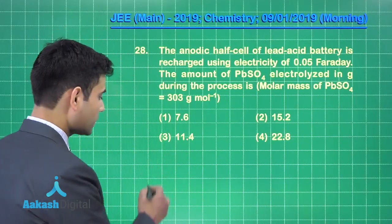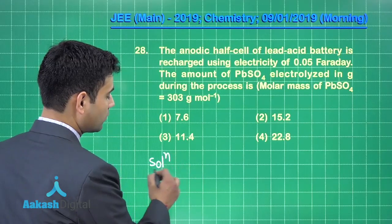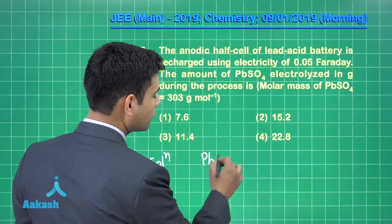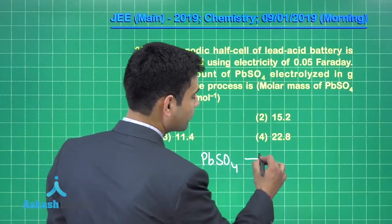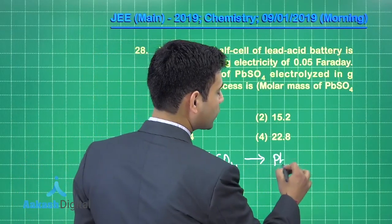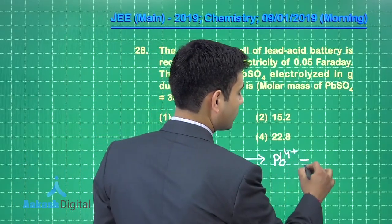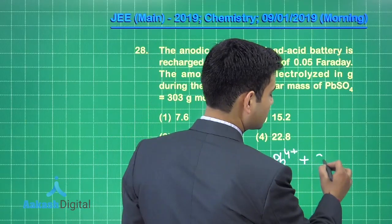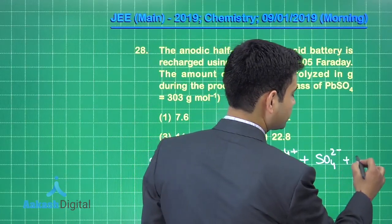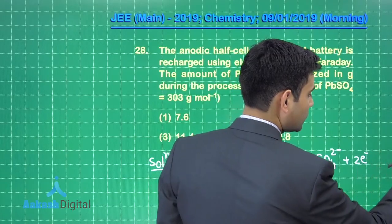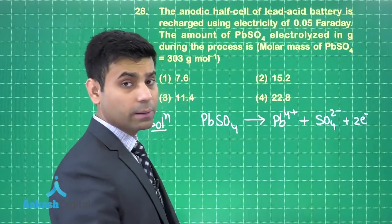Let us solve this question. As we know PbSO4 gets oxidized to Pb^4+ ions plus it will give us 2 electrons. So, the n factor here will be 2.